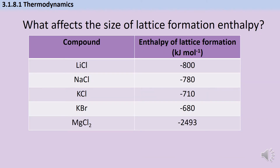Enthalpy of lattice formation tells you how strong the bonds are in an ionic compound. The more negative a value you have, the more exothermic the process of making that ionic compound was, and therefore that tells you we have stronger bonds. We always want to be talking in terms of these enthalpies being more negative or more exothermic. It's not a good idea to talk about it being larger, because that could be ambiguous and can often cost you the mark.